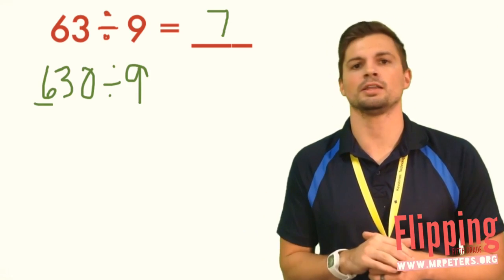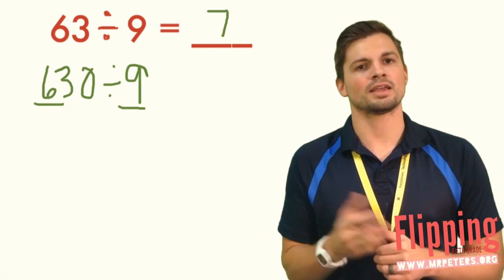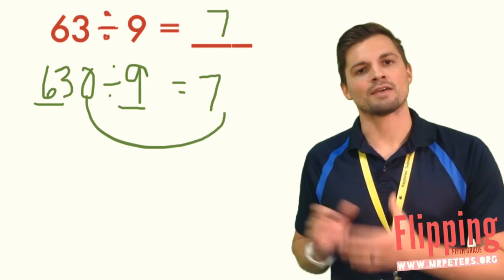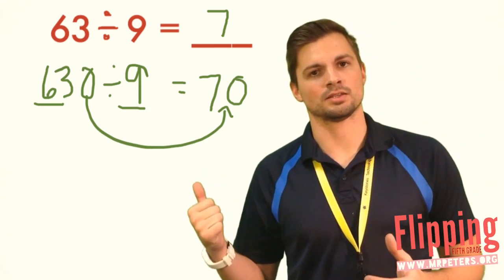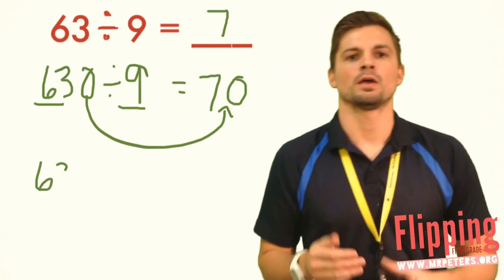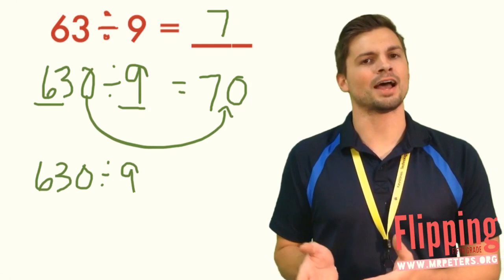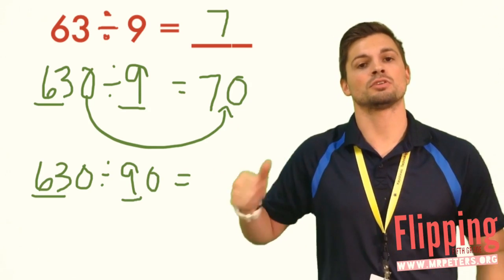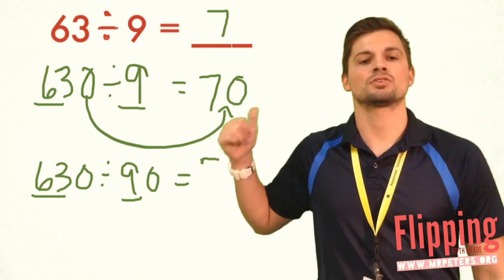63 divided by 9 is our basic fact. 63 divided by 9 we already know is 7. What about 630 divided by 9? Well again, underline your 63 divided by 9, underline that 9, and get 7. Have an extra 0, when we have that extra 0, we add it to the end. Now I'm going to throw you a curveball. Let's say it's 630 divided by 90.